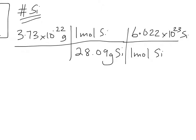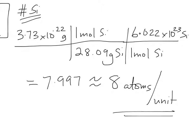And if you punch that into your calculator, you get 7.997, which is basically 8. And so that means that there are 8 atoms in our unit cell, which is the end of the problem.